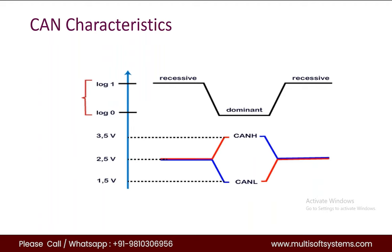To transmit zero on the CAN bus, CAN high should be applied at 3.5 volts and CAN low should be applied at 1.5 volts. In this case it will be dominant zero. The ideal state of the bus is only recessive, that is one. If any node reaches dominant state, it cannot move back to the recessive state by another node — it will remain at dominant state.